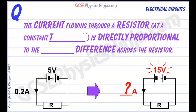The current flowing through a resistor at a constant temperature is directly proportional to the potential difference across the resistor.